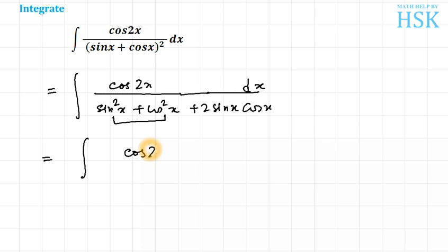So I'm going to get this as cos 2x upon 1 plus sine 2x. Here I've used this formula: 2 sine a cos a is equal to sine of 2a.